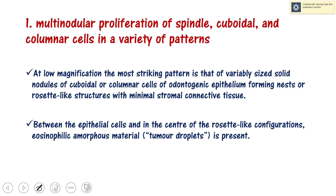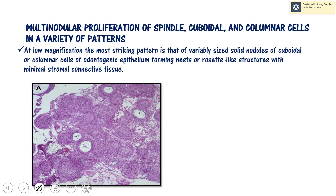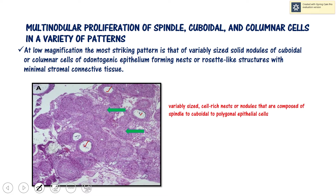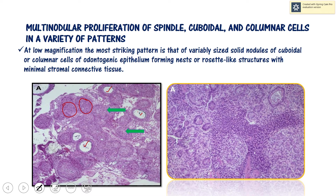At low magnification, the tumor shows variably sized solid nodules of cuboidal or columnar cells of odontogenic epithelium forming nests or rosette-like structures with minimal stromal connective tissue. One prominent pattern is the presence of cell-rich nodules or nests of columnar, cuboidal, and polygonal odontogenic epithelial cells. There is also presence of duct-like structures, which I'll come to later.